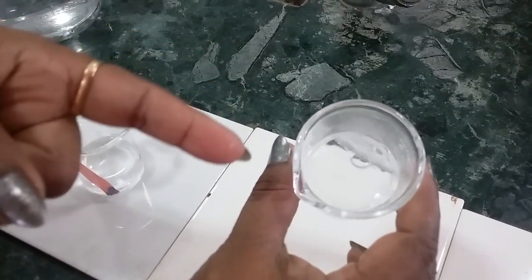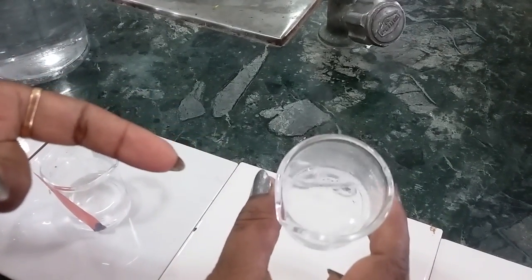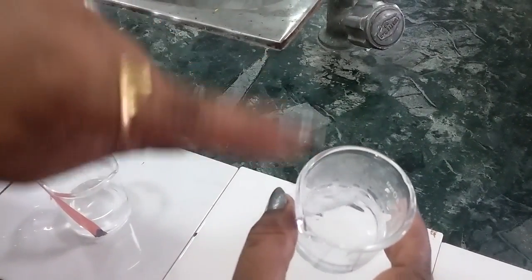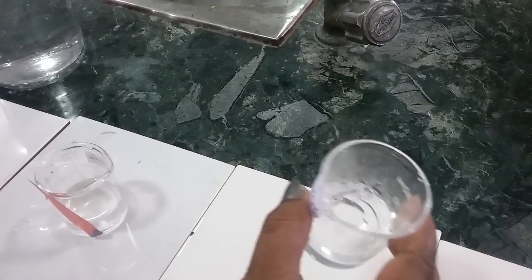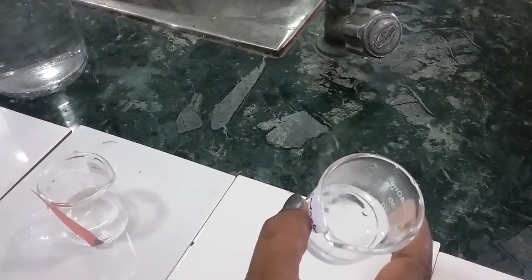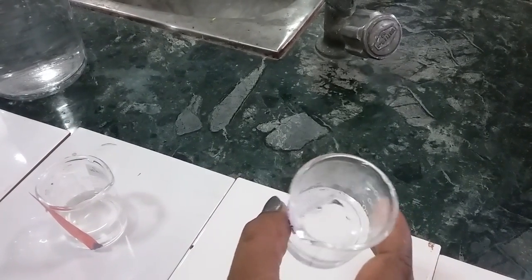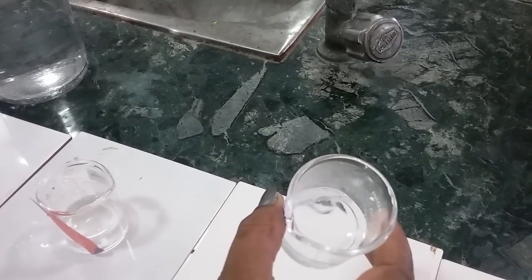This shows the magnesium ribbon dissolves in sulfuric acid. You can see the gases. It releases hydrogen when it reacts. Finally, when it dissolves, you will get magnesium sulfate solution.